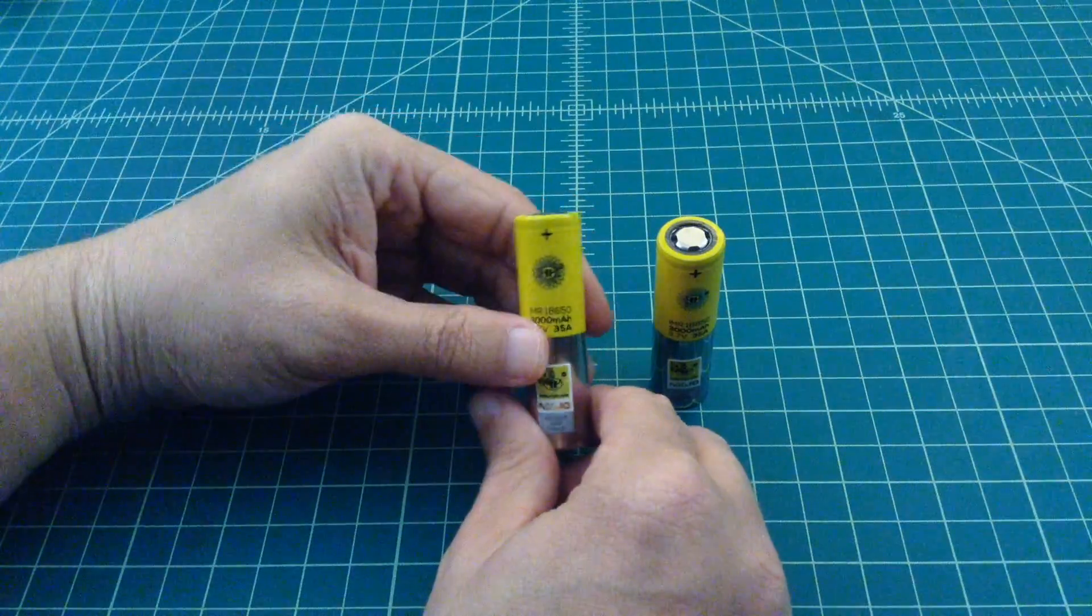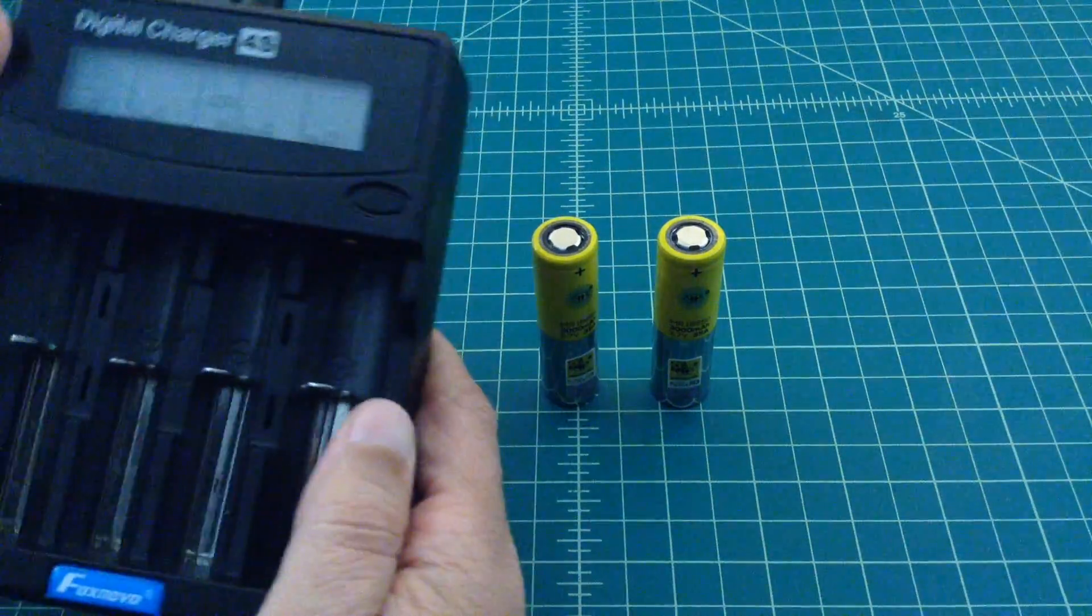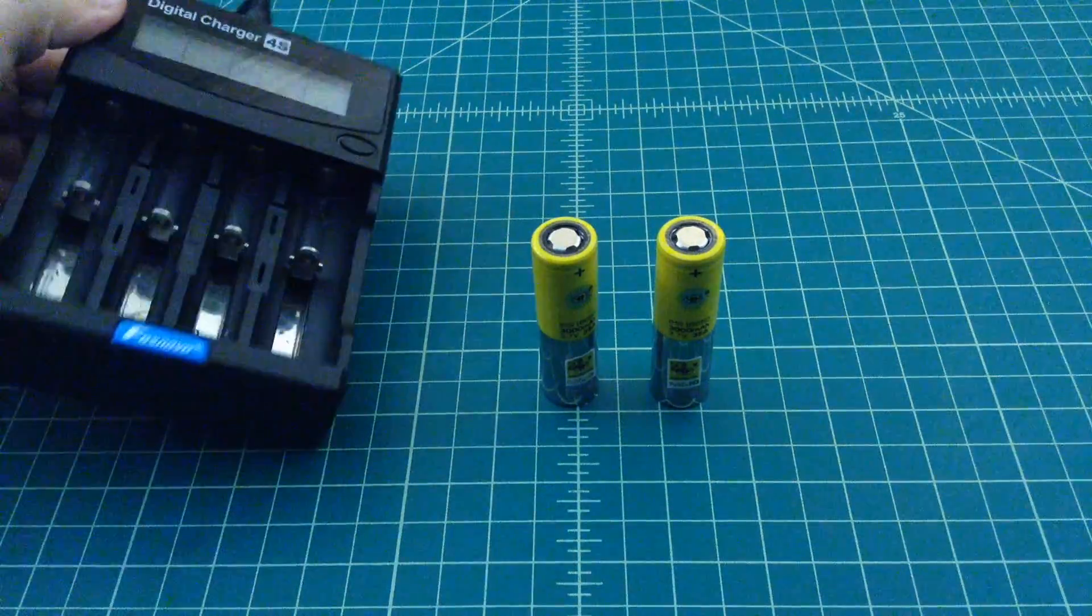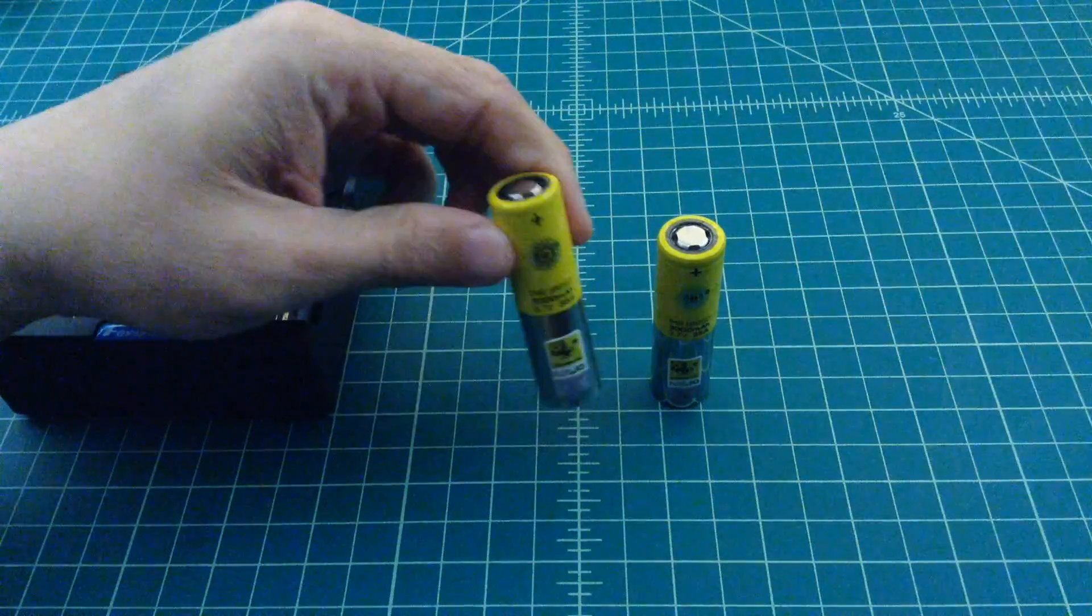So what we're going to do is we're going to throw these on a Fox Novo digital charger, the 4S. And we're going to measure the capacity of these batteries and see if they're up to what their claims are.